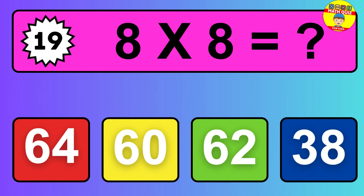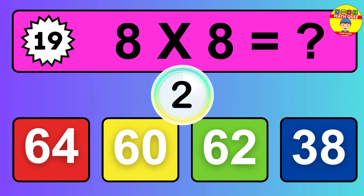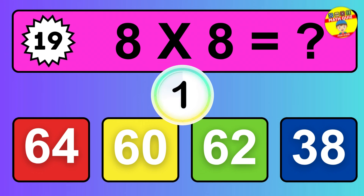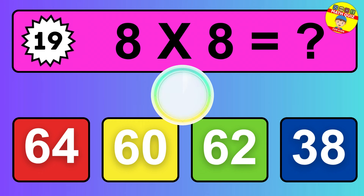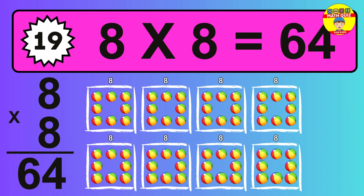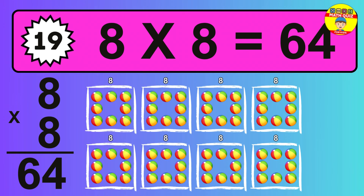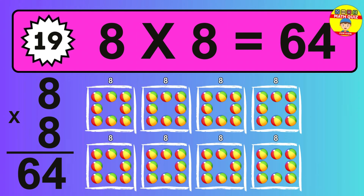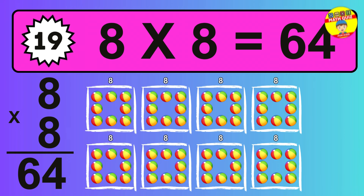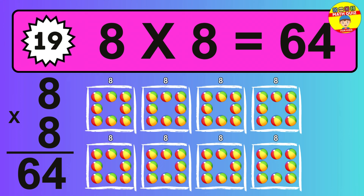Question 19. 8 times 8 equals what? The answer is 8 times 8 is 64. To calculate, we have 8 groups with 8 balls each one. So, how many balls do we have? 64 balls.